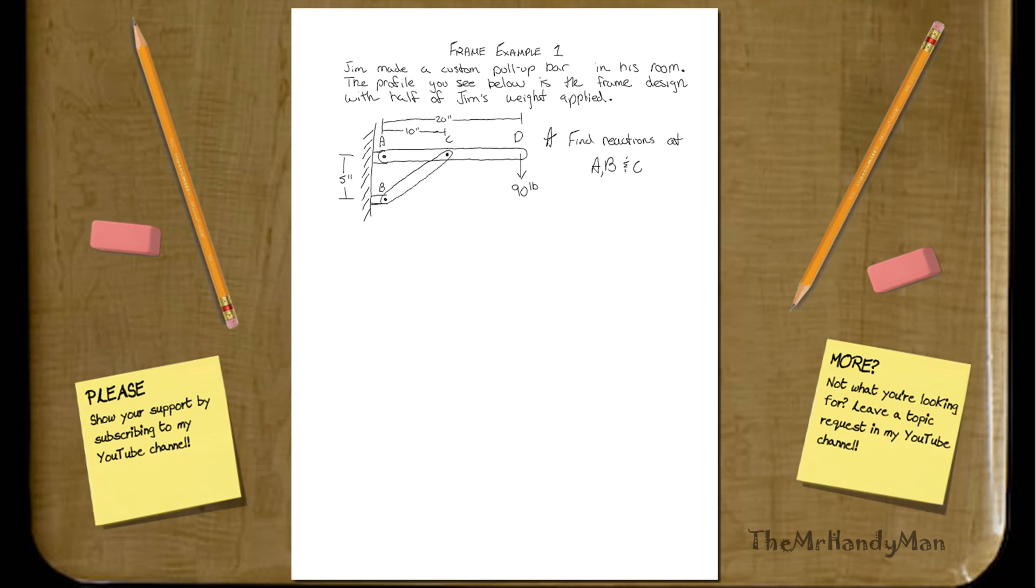This is the first frame example, and let's just jump right in. Jim made a custom pull-up bar in his room. The profile that you see below is the frame design with half of Jim's weight applied. Find the reactions at A, B, and C.